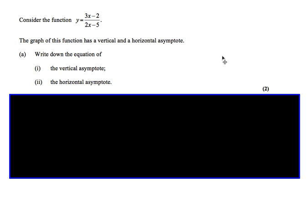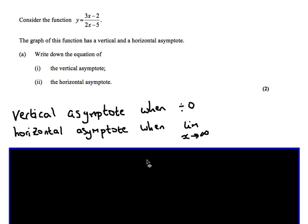One more question from the main core syllabus using the idea of limits. We've got a function with both a vertical and a horizontal asymptote, and we need to find the equations of each. For the vertical asymptote, we look for when the denominator equals 0, because you can't divide by 0. For the horizontal asymptote, we use the idea of a limit and see what happens when x approaches infinity.